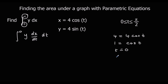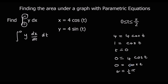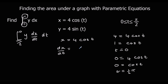When x is 0: 0 = 4 cos t, divide by 4, so 0 = cos t, and cos⁻¹(0) = π/2. So t equals π/2. Now y is 4 sin t, so we can substitute that in. We need dx/dt: since x = 4 cos t, dx/dt is −4 sin t, because cos differentiates to negative sin.